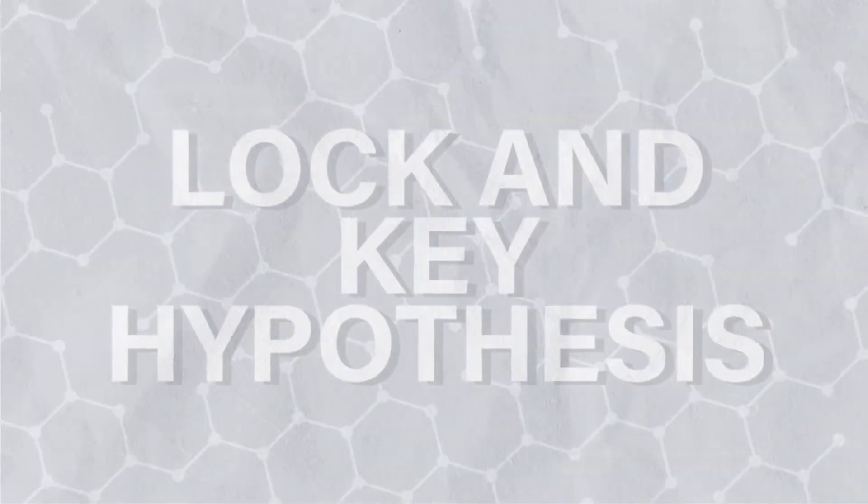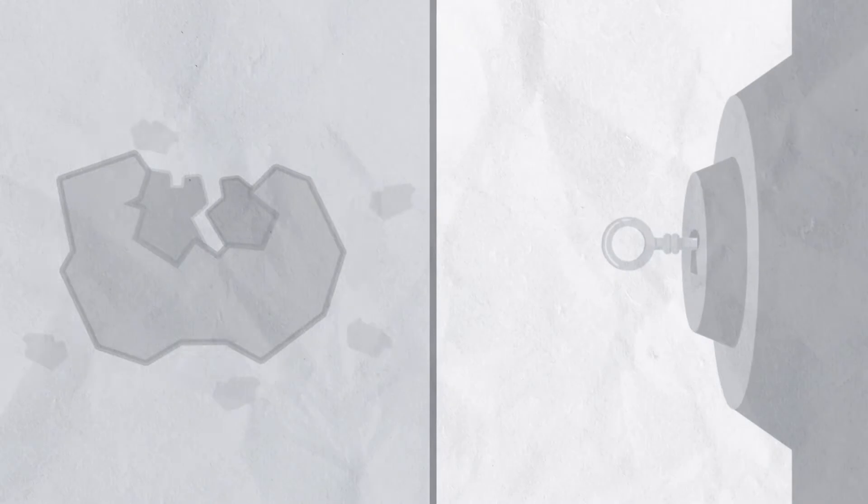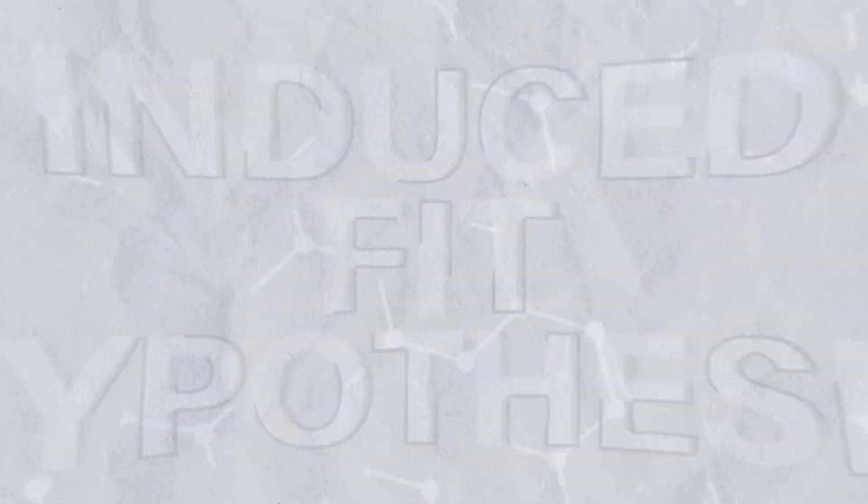Lock and Key Hypothesis. The substrate simply fits into the active site to form a reaction intermediate. Just like the key fits its specific lock that isn't changed here. Rather, the structure of the substrate absolutely complements the structure of the enzyme like puzzle pieces in this model.